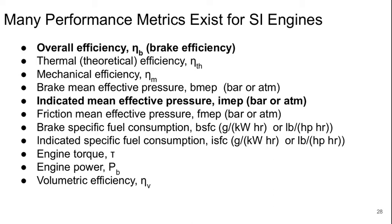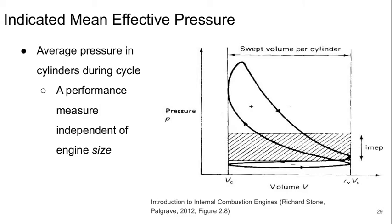Many performance metrics exist for these engines, but we're just going to talk about two of them today: the indicated mean effective pressure and the overall efficiency or brake efficiency. The indicated mean effective pressure is essentially the average pressure in the cylinders during a cycle. This is a really useful metric because it's actually the average delta pressure — the whole cycle just moves up and down depending on atmospheric pressure. It's a measure that is independent of the size of the engine, so it allows you to compare the performance of spark ignition engines of different sizes. The higher the indicated mean effective pressure, the more cycle work you can expect.